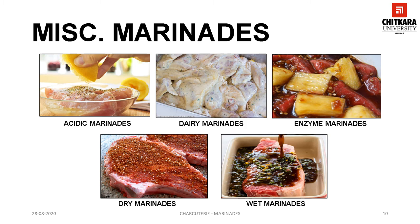The fifth one is wet marinade. Wet marinades are pastes which include Jamaican jerk seasoning and tomato-based rubs. The goal is to completely coat the meat with a mixture of spices and herbs so that it can create a thin layer of flavor before cooking.